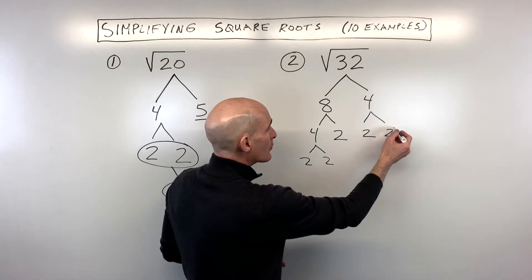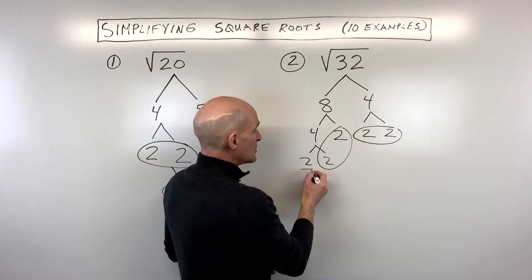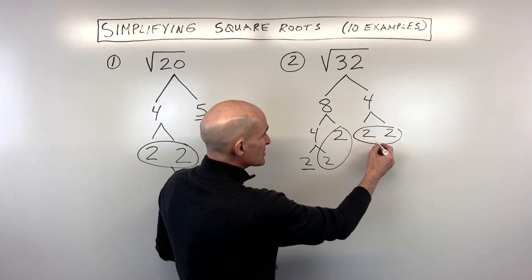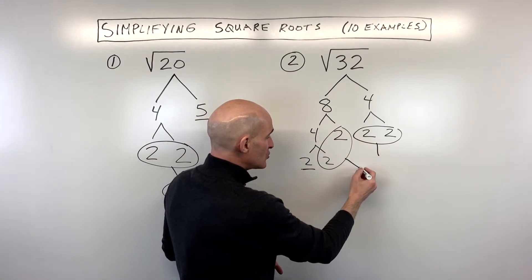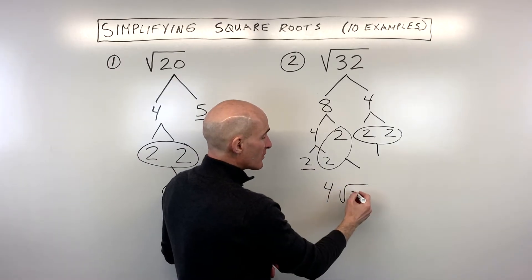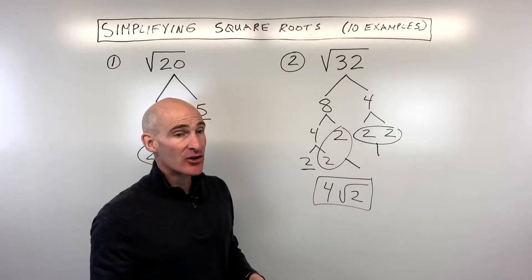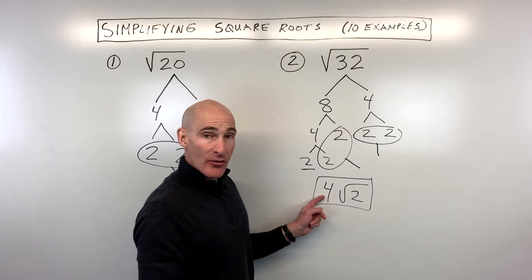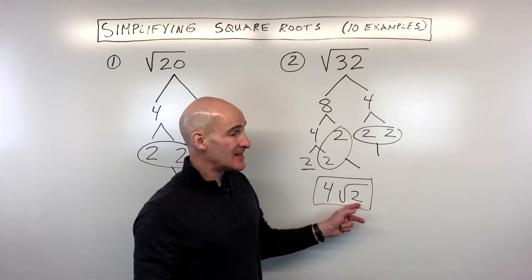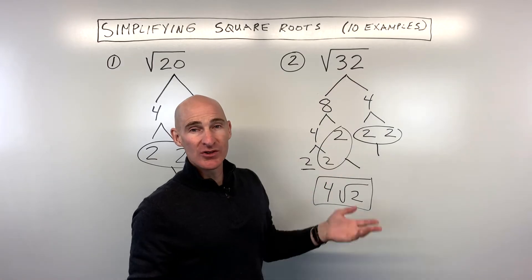Meaning two of the same number — I like to circle them. We have two pairs of 2s, and then a 2 left over that doesn't have a pair. So 2 times 2 is 4, and that 2 left over stays underneath the square root, giving us 4√2. You can check your answer by squaring the outside number: 4 squared is 16, multiplied by the inside number 2, gives you back 32.